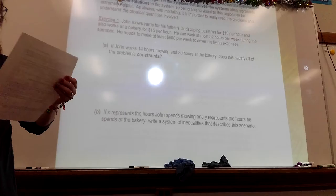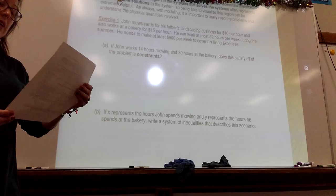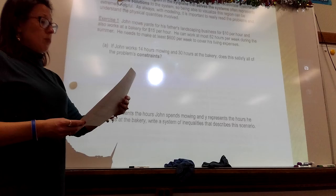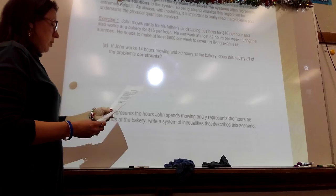John mows yards for his father's landscaping business for $10 per hour and also works at a bakery for $15 an hour. He can work at most 52 hours per week. During the summer, he needs to make at least $600 per week to cover his living expenses. If John works 14 hours mowing and 30 hours at the bakery, does that satisfy all of the problem's constraints?